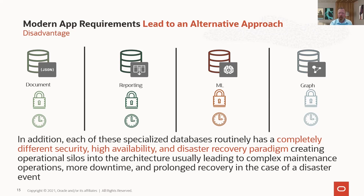Each system has its own security, its own high availability, built into its own silos. The result is that anytime there's a maintenance activity or a disaster, we're talking about prolonged recovery. It may take a long time to get back up and running, downtime may be pretty significant, and there may be data loss. You may not be able to recover that data — it may be gone — and have to recover from backup and hope that a backup was taken.